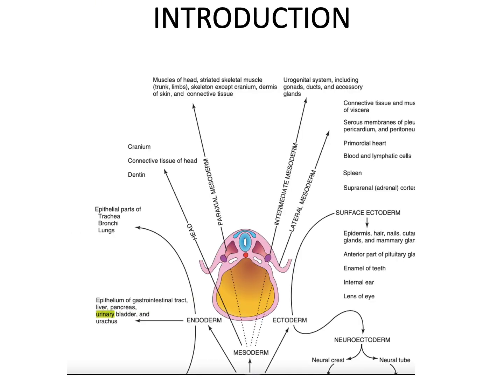This is a vertical section through the developing embryo. Looking at it, you can see that the trilaminate disc has been established, and for that matter you have the radium layers. So you can see that the neural tube has been formed. That neural crest should be ectoderm, that is mesoderm, and that is going to be the endoderm with the yolk sac showing here.